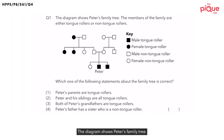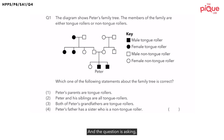Question 1. The diagram shows Peter's family tree. The members of the family are either tongue rollers or non-tongue rollers. And the question is asking: which one of the following statements about the family tree is correct?